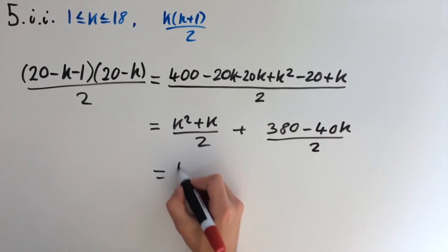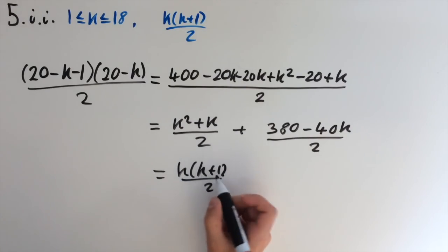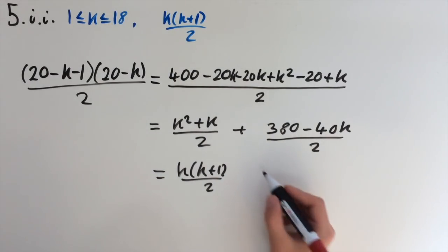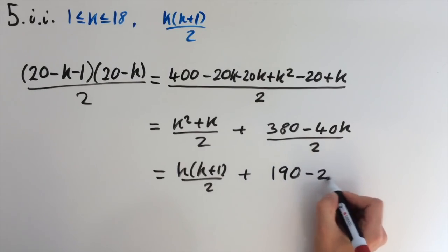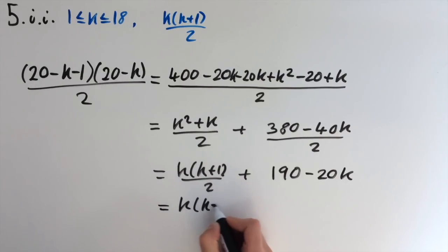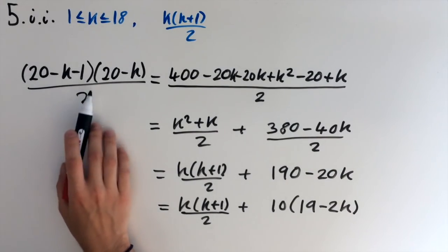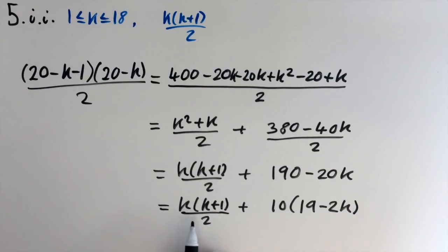So we can factorize this as k times k plus 1 over 2, which is exactly this formula we had earlier. So if we can prove this as a multiple of 10, then we've shown that it's going to be given to the same child. So this simplifies as 190 minus 20k. And we can indeed factor out a 10 from it. So k times k plus 1 over 2 plus 10 times 19 minus 2k. So we've shown that this term right here is a multiple of 10. So any multiple of 10 isn't going to affect which child is given around the circle. So this formula represents which child gets a 20 minus k minus 1th sweet. And this formula represents which child gets a kth sweet. And we've shown that this side is going to be the same child as this side, because we're only adding on a multiple of 10, and this doesn't affect it.